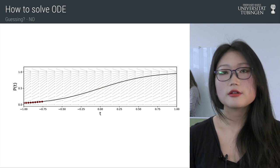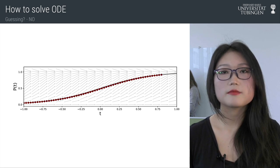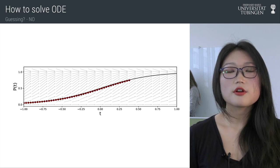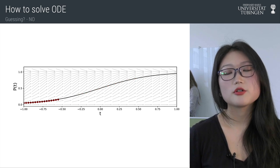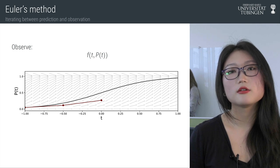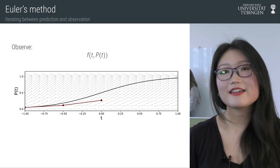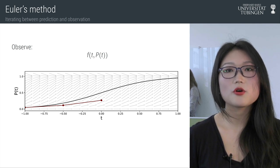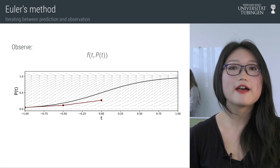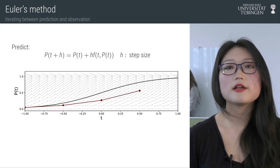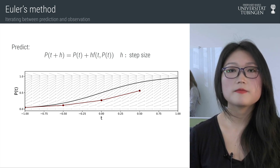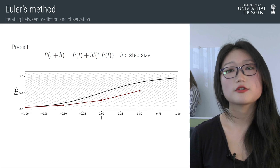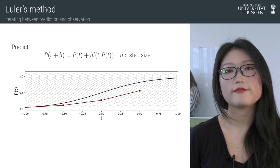A simple but generally working method is the Euler's method. Starting from the initial value, it goes iteratively forward in the time dimension. To take a closer look, it works actually like a learning agent. Firstly, it observes the current vector field value f and then it predicts the next value based on the current value P(t) and shifts it by the product of step size h and the vector field, namely our observation f.